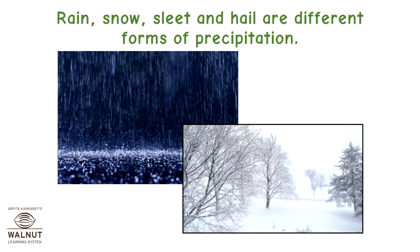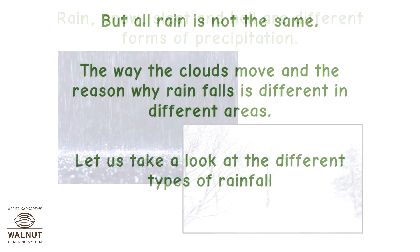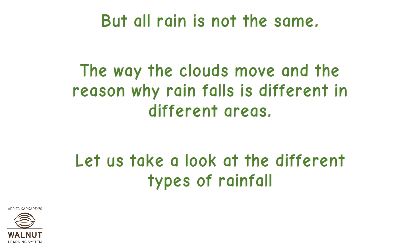Rain, snow, sleet and hail are different forms of precipitation. But all rain is not the same. The way the clouds move and the reason why rain falls is different in different areas. Let us take a look at the different types of rainfall.